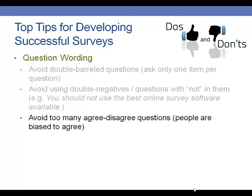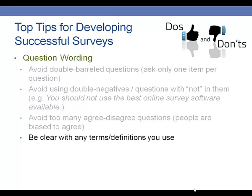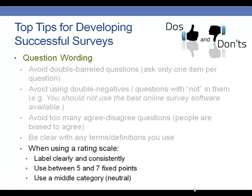Avoid too many questions that are simply agree-disagree. It's okay to have some, but people are biased to agree. Be clear with any terms and definitions you use — if you're going to use a term frequently cited in your program but not universally known, remind people what that term means right in the survey. If you're going to use a rating scale, make sure you label it clearly and consistently. If your first questions use a scale of strongly disagree to strongly agree, your next set should use the same scale. When possible, use between 5 and 7 fixed points and allow for a middle or neutral category.